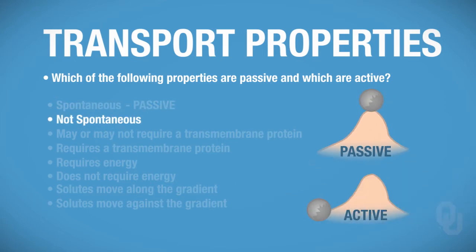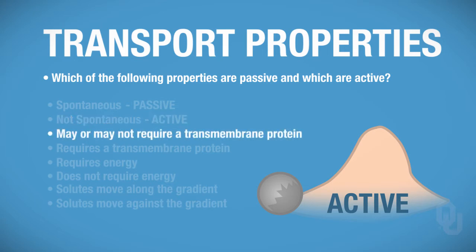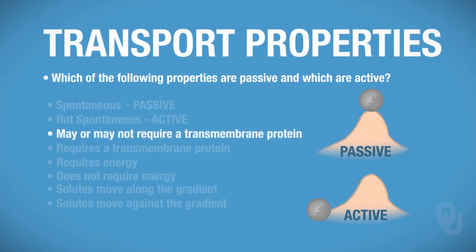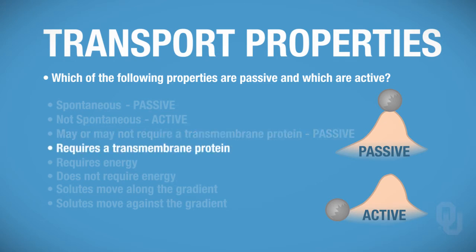Not spontaneous — it's not spontaneous for this rock to automatically go up the hill on its own; it would need some help. So that's an active process; it's not spontaneous. Now, may or may not require a transmembrane protein — that's going to be for passive types of transport, which we'll discuss in detail shortly. And then 'requires a transmembrane protein' is an active form.